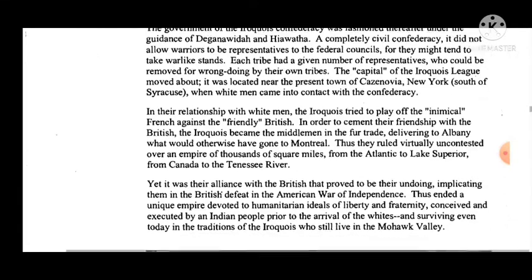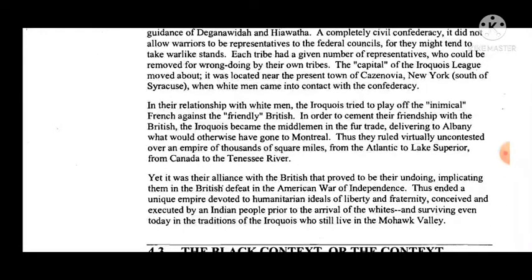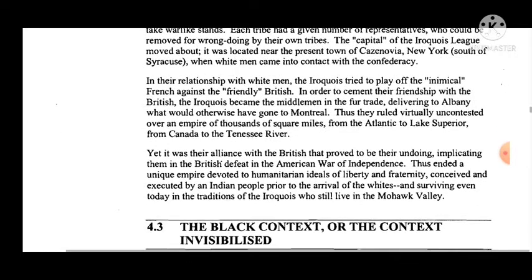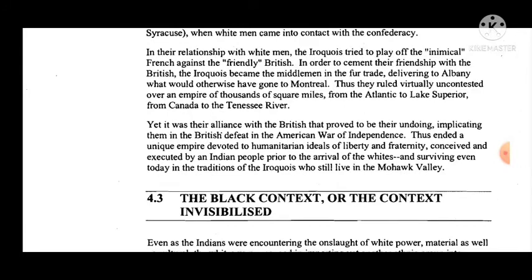A completely civil confederacy, it did not allow warriors to be representatives to the federal councils, for they might tend to take a warlike stance. Each tribe had a given number of representatives who could be removed for wrongdoing by their own tribes. The capital of the Iroquois league was located near the present town of Cazenovia, New York, south of Syracuse. In their relationship with white men, the Iroquois tried to play off the inimical French against the friendly British.